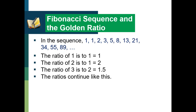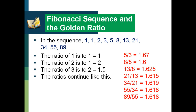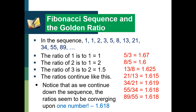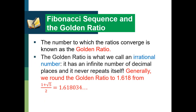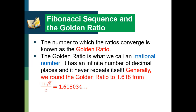Continuing the ratios: 5 to 3 gives 1.67, 8 to 5 gives 1.6, 13 to 8 gives 1.625, 21 to 13 gives 1.615, 34 to 21 gives 1.619, 55 to 34 gives 1.618, and 89 to 55 gives 1.618. Notice that as we continue down the sequence, the ratios seem to be converging upon one number — 1.618. The number to which the ratios converge is known as the golden ratio. The golden ratio is an irrational number — it has an infinite number of decimal places, it's non-terminating and non-repeating.